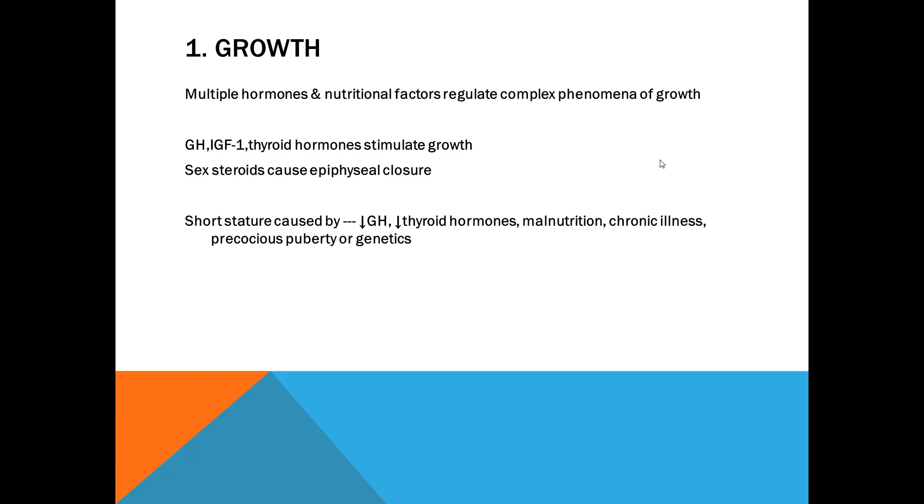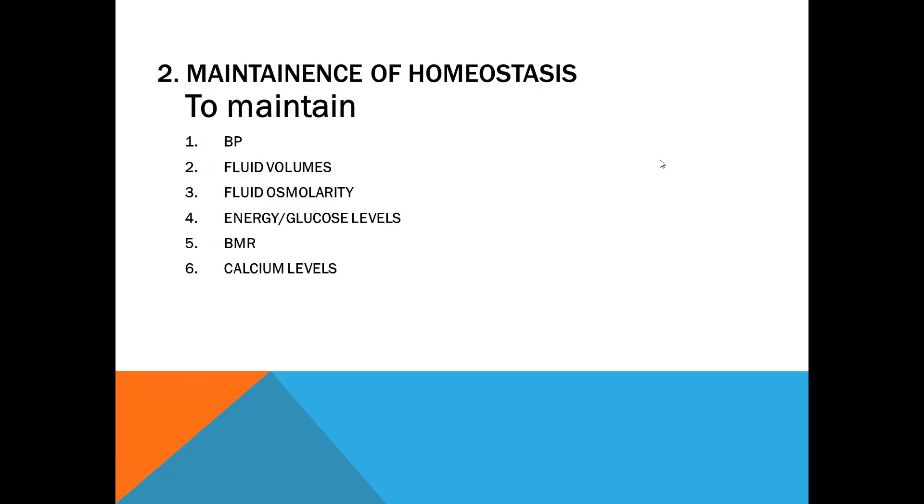First, growth. Growth is a complex phenomenon. Multiple hormones and nutritional factors are required. We require growth hormone, insulin-like growth factor, thyroid hormones—they stimulate growth. Nutritional factors and sex steroids cause epiphyseal closure, meaning the growing area of bone is fused. So bones cannot grow. What are the reasons for short stature? Deficiency of growth hormone, deficiency of thyroid hormone, malnutrition, chronic illness, precocious puberty—precocious is early onset of puberty because as soon as sex hormones are formed, epiphyseal closure will occur. So the child will not be able to grow. Also genetics. These are the reasons for short stature.